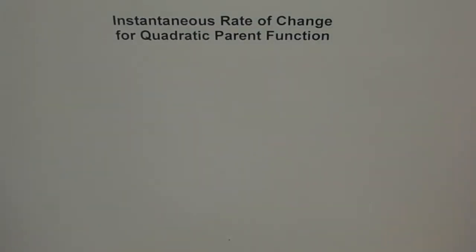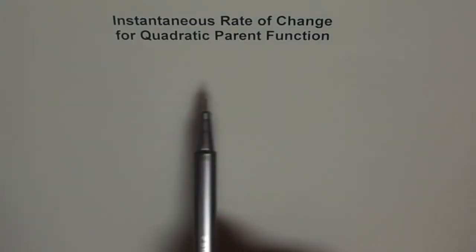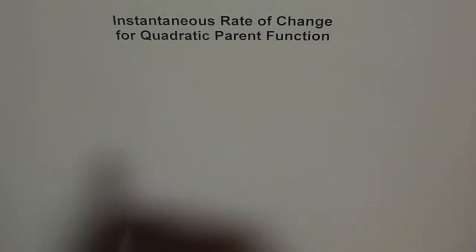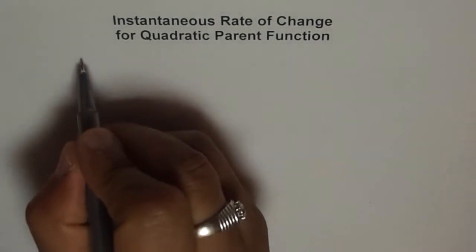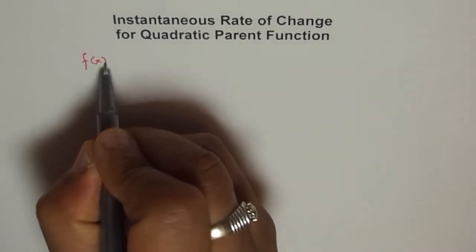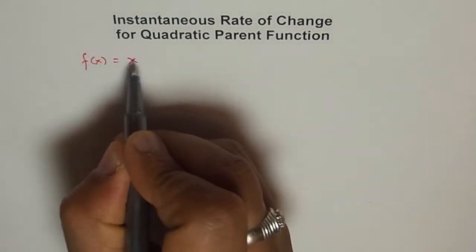In this series on instantaneous rate of change of parent functions, we have the quadratic parent function. The quadratic parent function is f(x) = x².